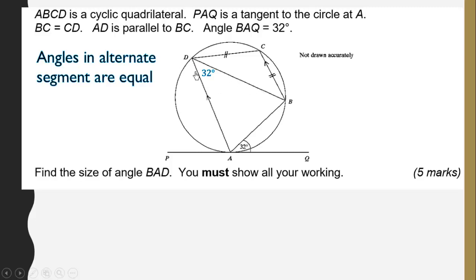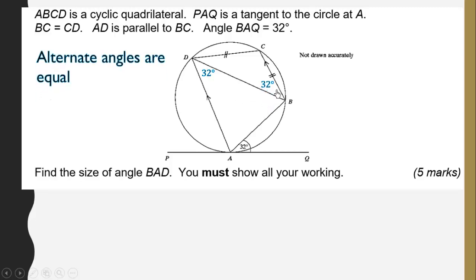You have to know how to identify angles in alternate segments. This is the point of tangency, and the two lines creating the angle should have a third side connecting them on the circumference. The point of tangency is here, and the two arms should meet with a third side on the circumference — that gives us the angles in alternate segment.